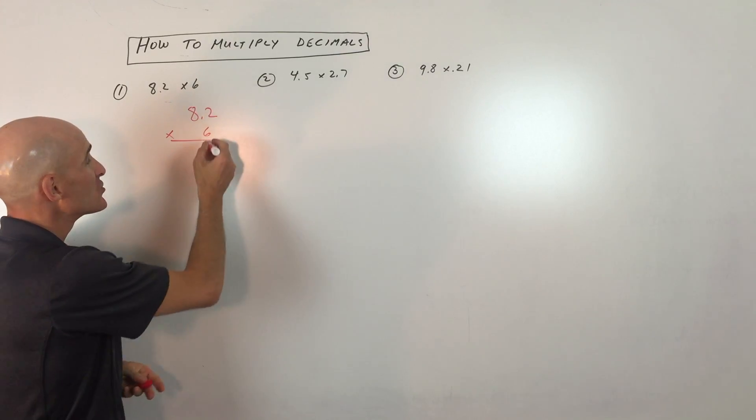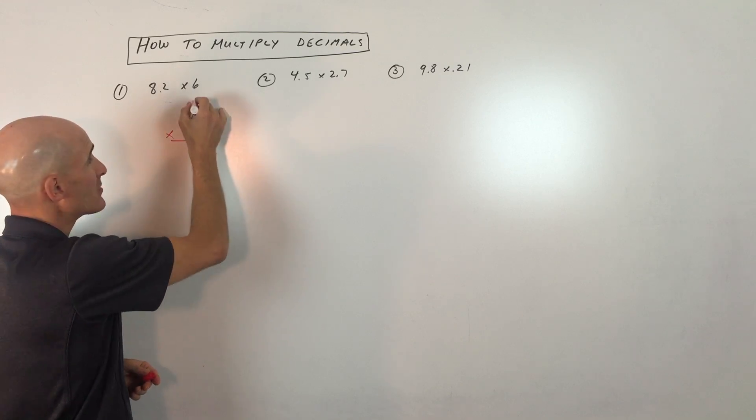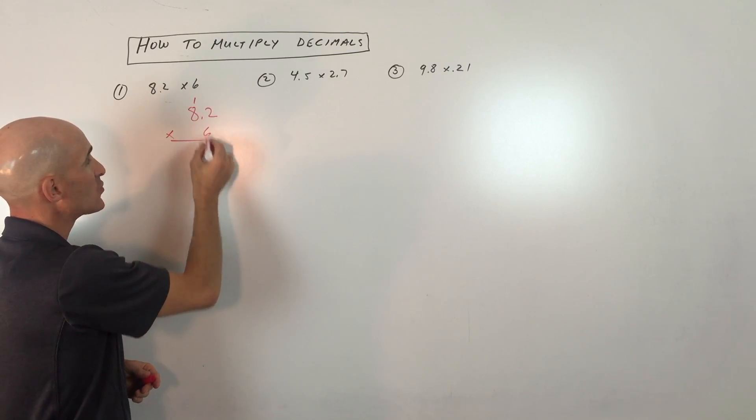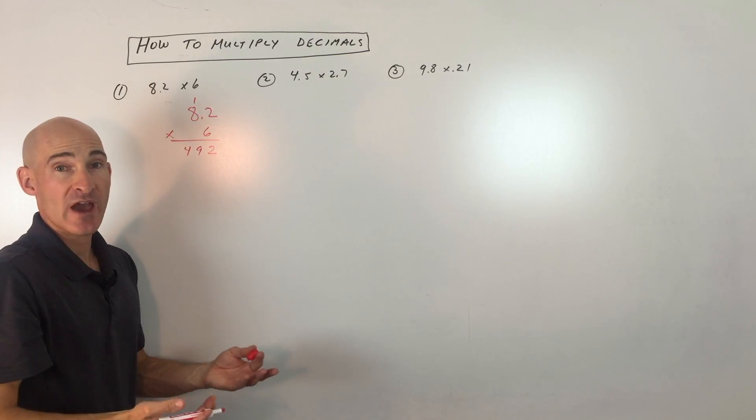You're just going to pretend like this is 82 times 6. So 6 times 2 is 12. I put down the ones unit and I carry the tens unit. 6 times 2 is 12. 6 times 8 is 48 plus 1 is 49. And that's it. We've got it.